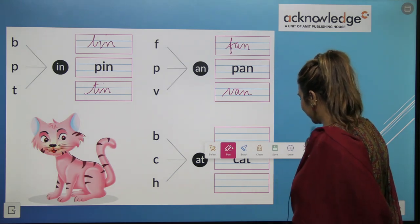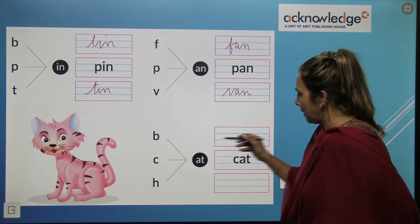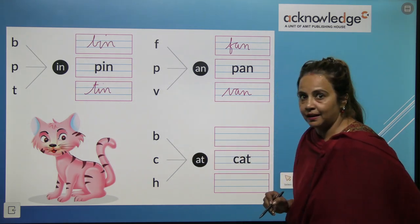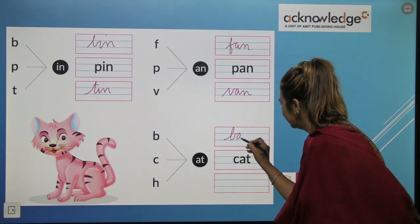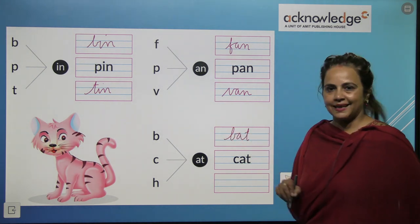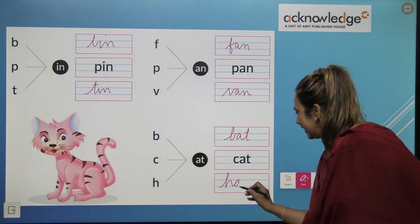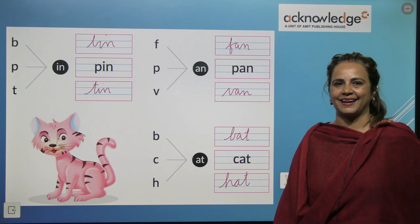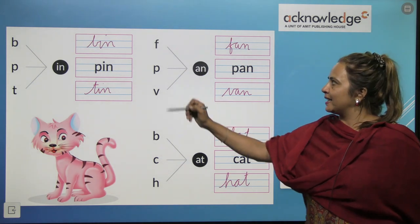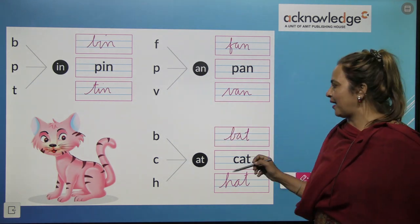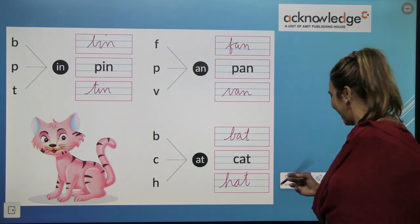Now, next is B, A, T, bat. C, A, T, cat. H, A, T, hat. Bin, bin, tin. Fan, pan, van. Bat, cat, hat.